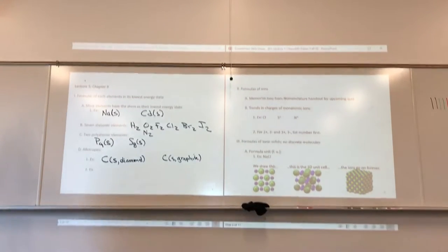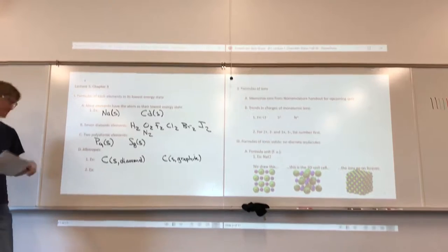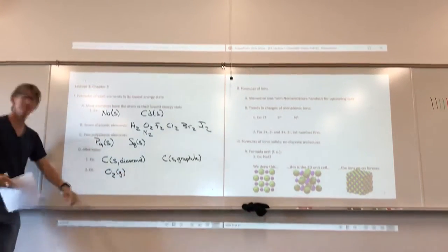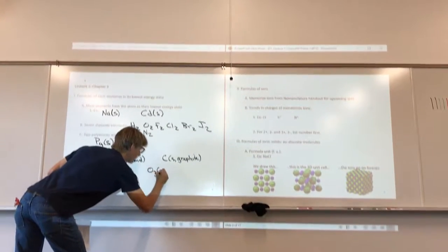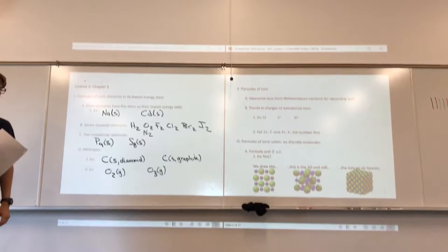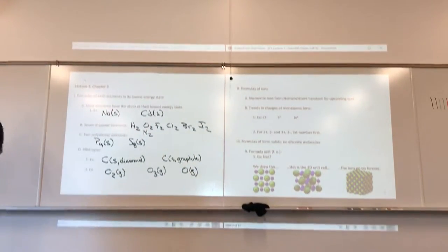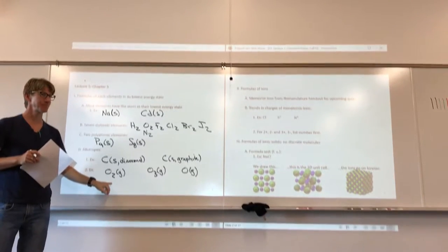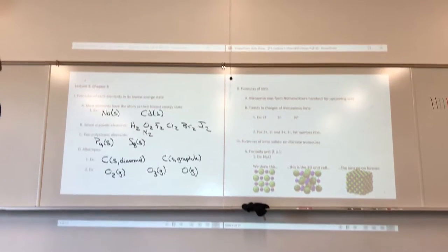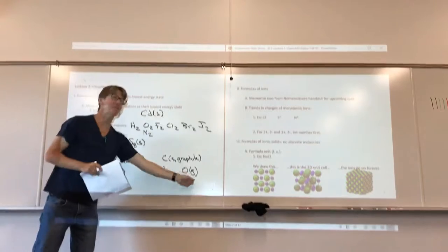Both diamond and graphite are elements because they're both only carbon. Similarly, oxygen gas and ozone are both allotropes of oxygen — both only oxygen, two different forms, and both are covalent. The lowest energy form of oxygen is O2, which is what the periodic table tells us — it's a gas in its lowest energy form. Ozone is also a gas, but not the lowest energy form.